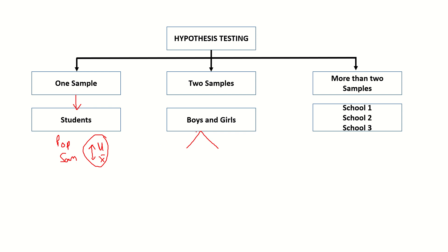In case of two samples, take for example we are going to compare the marks of boys and girls students. In that case we will have μ1 and μ2 for the two populations, and we will have X̄1 and X̄2 for the two samples. What we are going to do is compare whether there is a significant difference between the marks of boys and girls based on the sample collected.